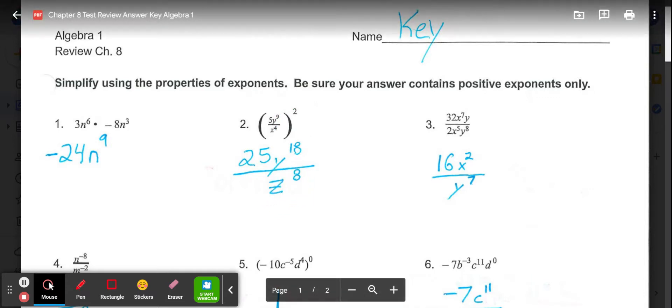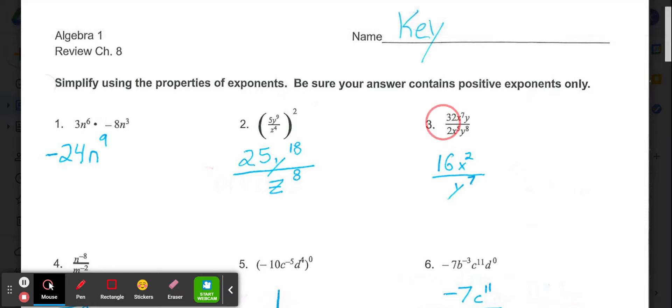Then in number 3, we have 32x to the 7th y over 2x to the 5th y to the 8th. The 32 and 2 can be simplified to 16 over 1, so we'll just put the 16 on top. X to the 7th over x to the 5th, we have to subtract 7 minus 5, leaving us with x to the 2nd on top. And then y to the 1st over y to the 8th, 8 minus the 1 on top, would leave us with y to the 7th on bottom.